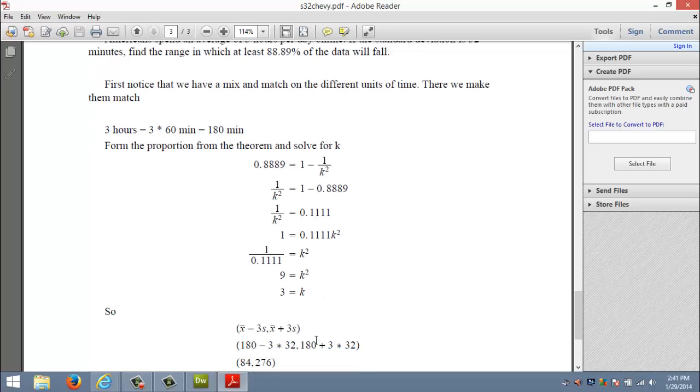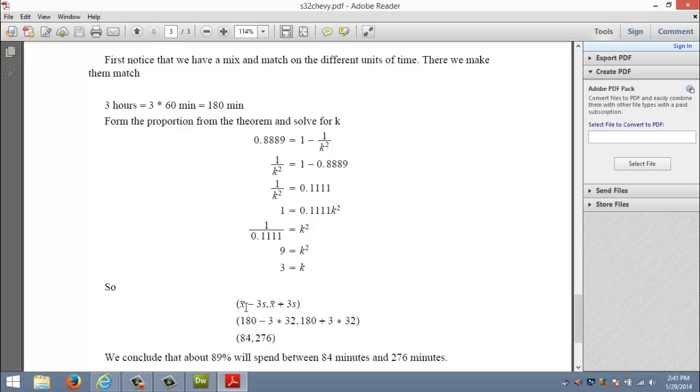If k is 3 that means I'm going three standard deviations around the mean. Remember we converted the hours to minutes. So that's going to be 180 plus three standard deviations, so three times 32.